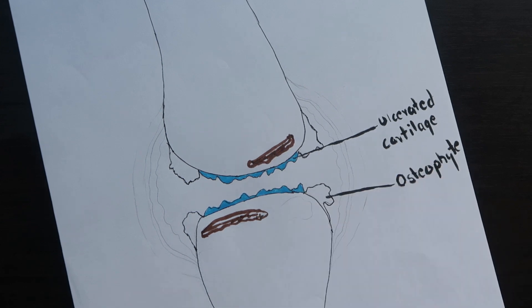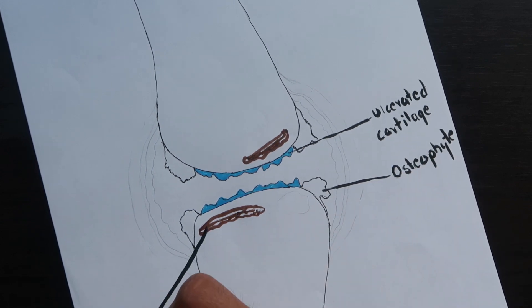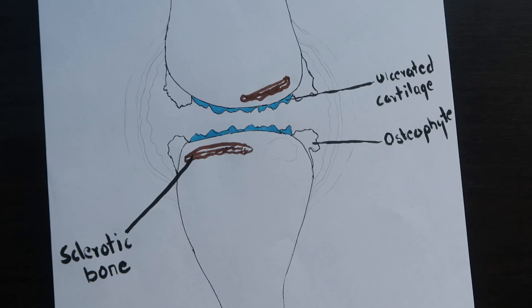Osteoarthritis is accompanied by abnormalities in subchondral bone which becomes sclerotic, and subchondral cysts are also found.